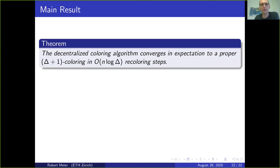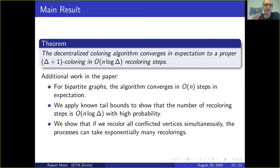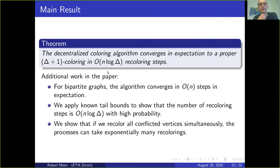This potential function is sufficient to prove our main theorem. Additionally, in the paper we show that for bipartite graphs the algorithm converges in order n steps instead of n log delta. We apply tail bounds for the drift theorems to show the result holds not only in expectation but also with high probability. We also show that if all conflicted vertices are recolored simultaneously, the process can take exponentially many recolorings—so taking turns is essential.